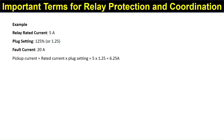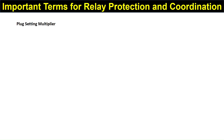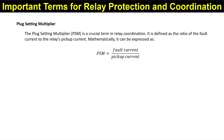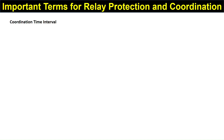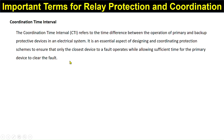Plug Setting Multiplier, or PSM, is an important term in relay coordination. It is defined as the ratio of the fault current to the relay pickup current: PSM = Fault Current / Pickup Current. The PSM is a way to measure how much stronger the fault current is compared to the minimum current needed to trigger the relay.